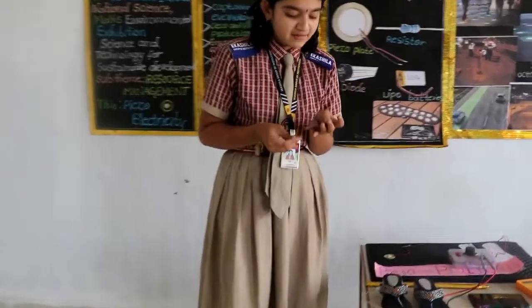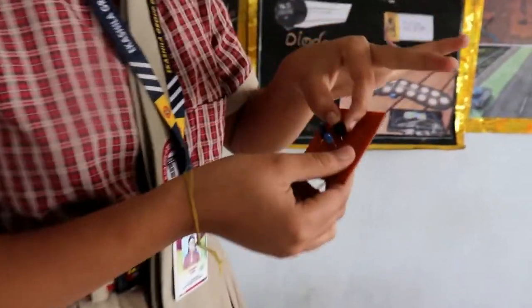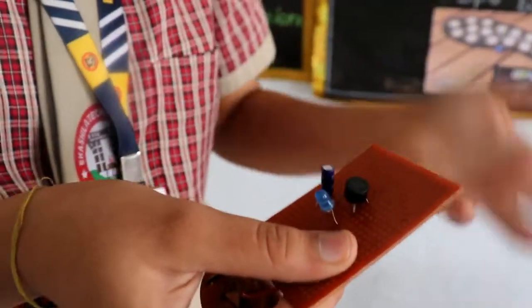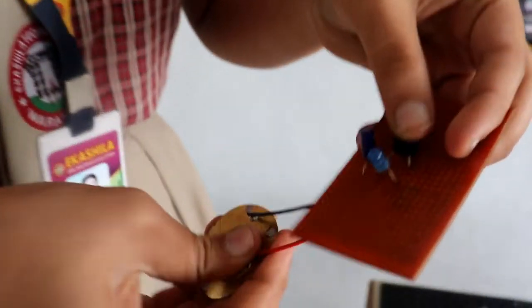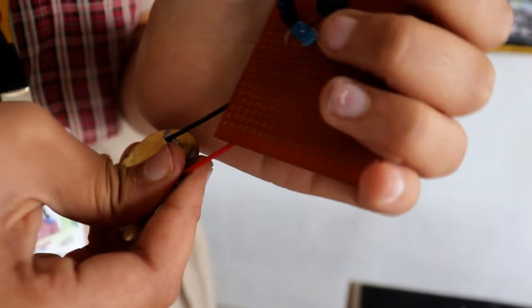See here. This is the piezo plate. We have connected it to the bridge diode. This bridge diode converts alternating current to direct current, because AC cannot be stored in the battery. Next, through this diode, it passes to the capacitor, capacitor to the light, means load.